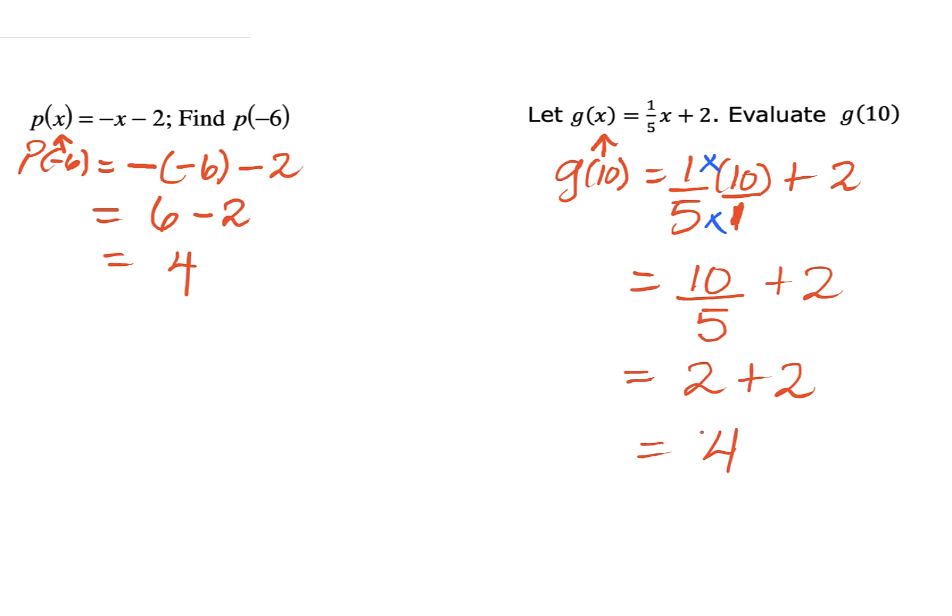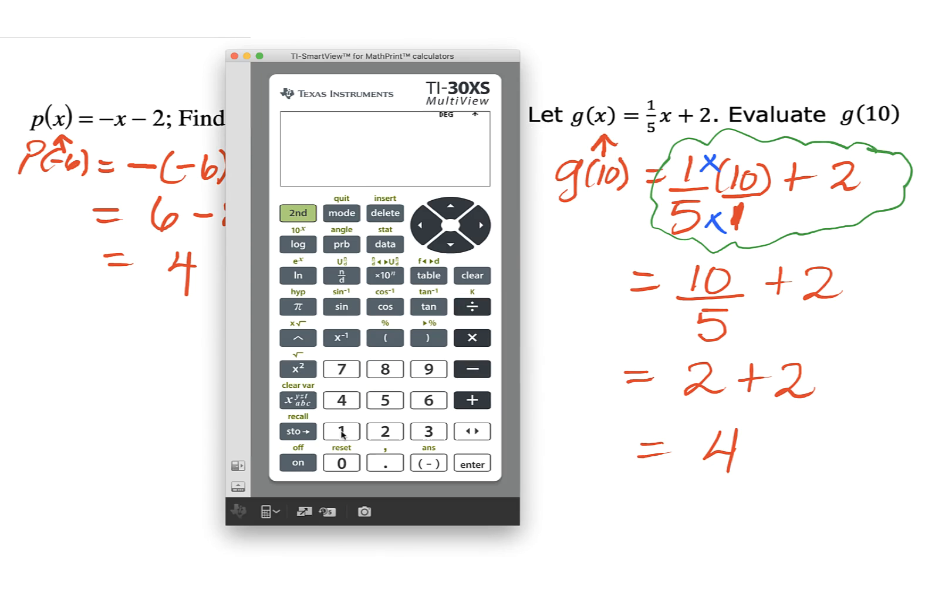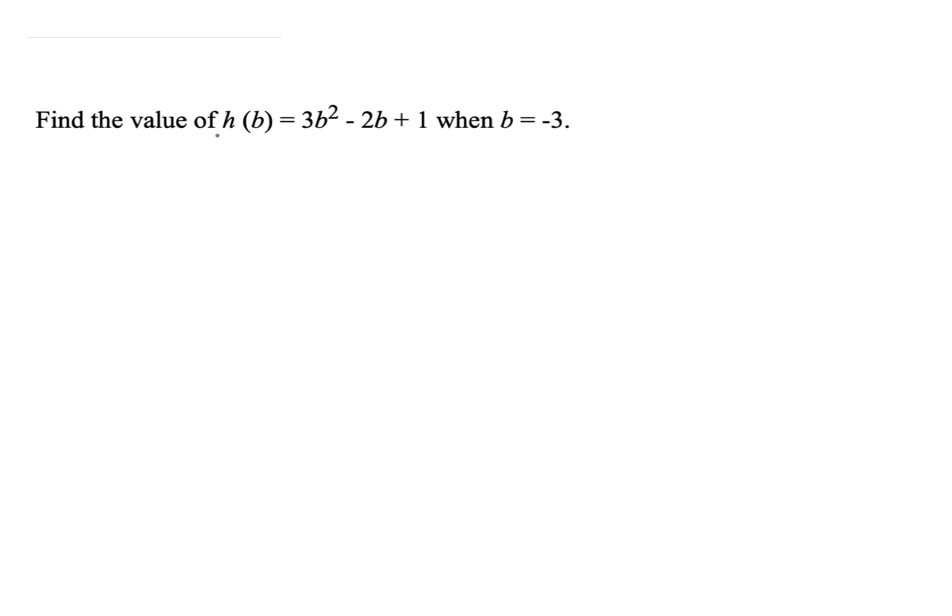Now, remember the TAKS test has two parts. One part, calculators are allowed. Second part, non-calculator. So if you're on the TAKS test, and this question appeared in the calculator section, once I did my substitution, this is what I would place in my calculator. So I'll get my calculator, 1, fraction function, 5, to the right, open parentheses, 10, let's close the parentheses, and finally add 2. Notice I got my answer of 4.